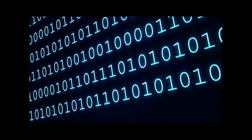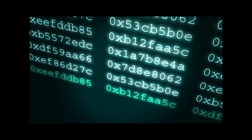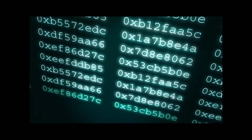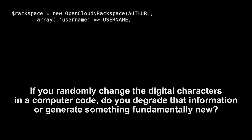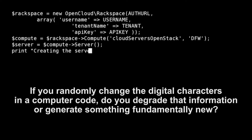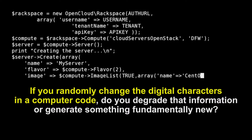And that raises a big problem, and this is really at the forefront of the Cambrian mystery. Think of it in terms of computer science. If you have a section of functioning computer code, and it forms a program, and you start randomly changing the digital characters — the zeros and ones — ask yourself: are you more likely to degrade that information or to generate something fundamentally new?